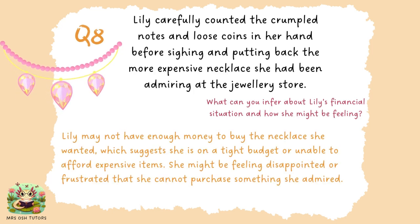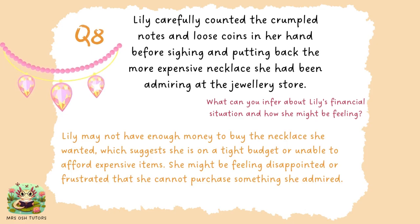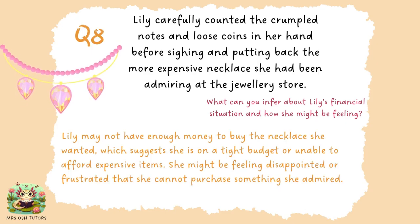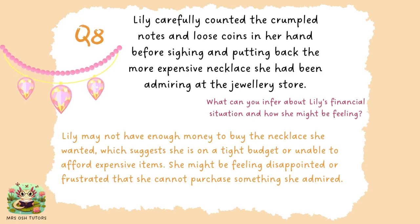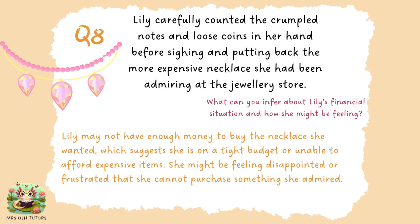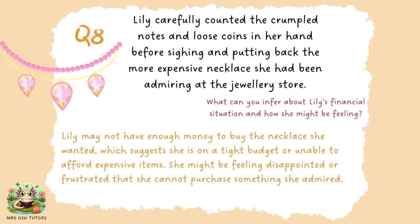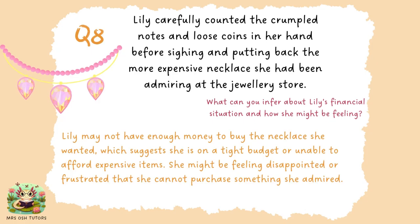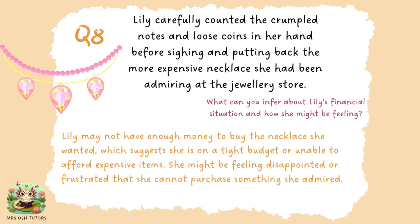Finally, Lily carefully counted the crumpled notes and loose coins in her hand before sighing and putting back the more expensive necklace she had been admiring at the jewellery store. Hopefully you managed to write quite a lengthy explanation. This is a suggestion: Lily may not have enough money to buy the necklace she wanted, which suggests she is on a tight budget or unable to afford expensive items. She might be feeling disappointed or frustrated. The fact that she carefully counts the coins, that the necklace is described as expensive, and that she returns it are all evidence you could include.